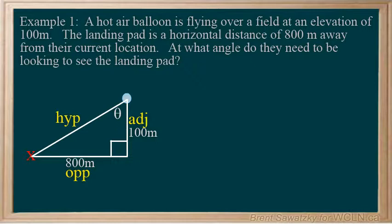So which trig ratio are we going to use? We know our unknown, in this case, is our theta, the angle. Therefore, we don't want any other unknowns. So we'll need to include our two knowns, the 800 meters, and the 100 meters. Which trig ratio would use these sides?